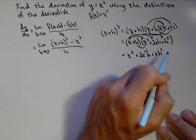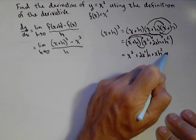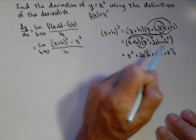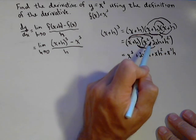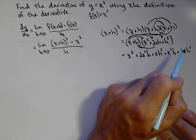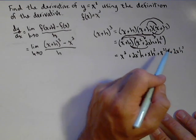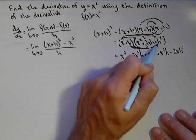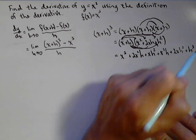Now we need to distribute the h through. So plus x squared h, plus two xh squared, and then finally, plus h cubed.